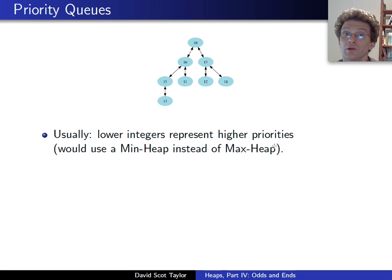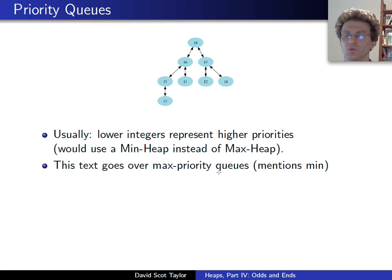Next up. So heaps are often used for priority queues. The book talks about a max priority queue, where the highest priority gets the highest number. A lot of times in implementation, people actually say the lowest number is the highest priority.